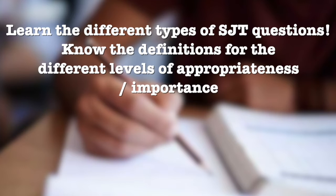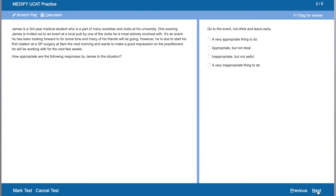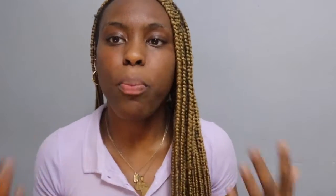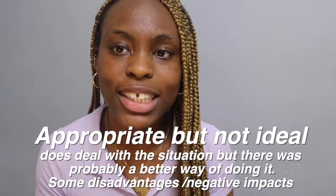Know your types of questions in SJT so you can master each type individually. The first type is 'appropriate' questions — you're given a scenario and asked how appropriate it is to perform a certain action. It's important to define each option because it's a spectrum from very inappropriate to very appropriate. 'Very appropriate' actions usually deal with the situation at hand and have no negative impacts or consequences.